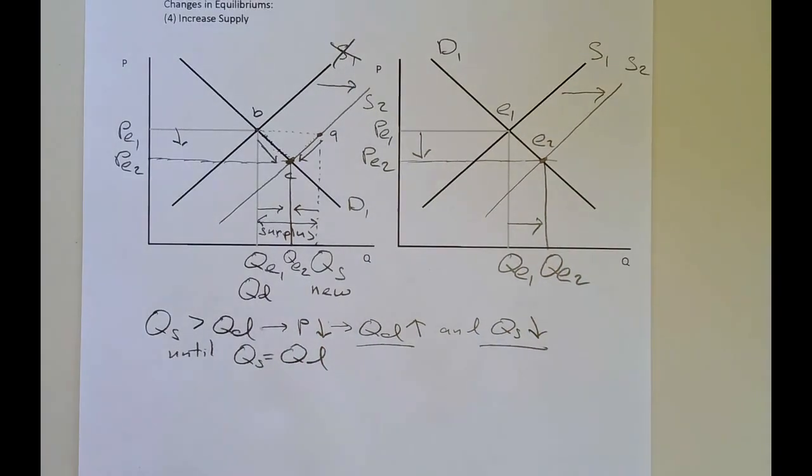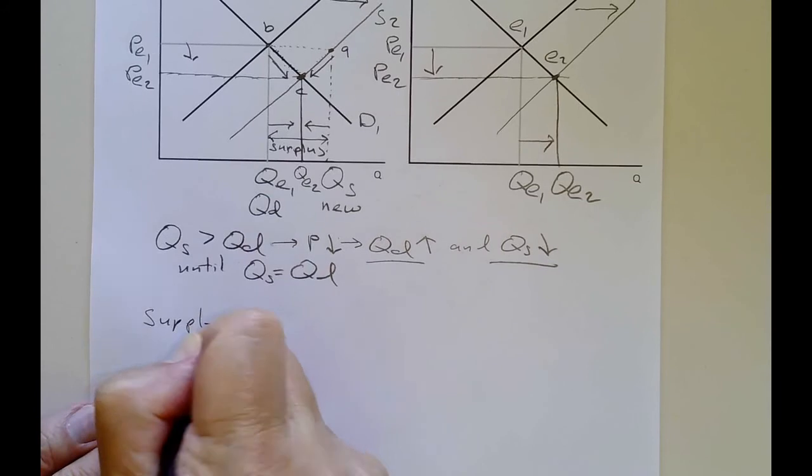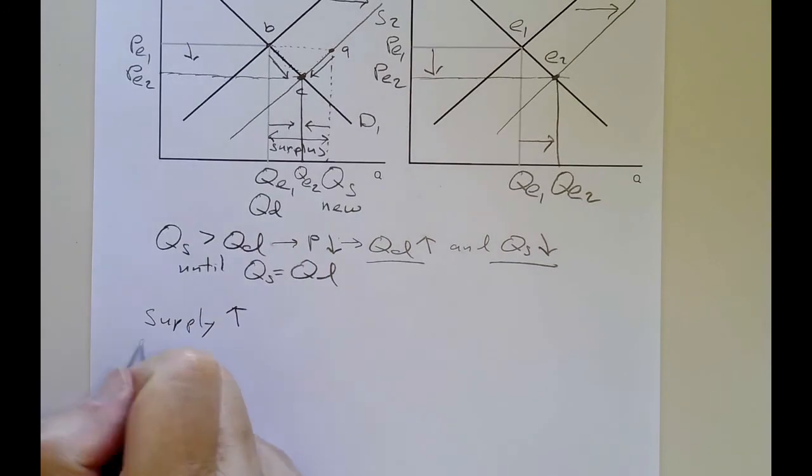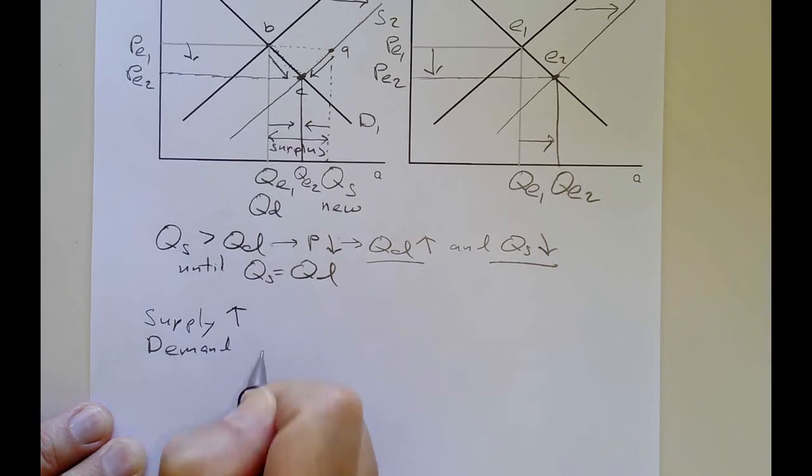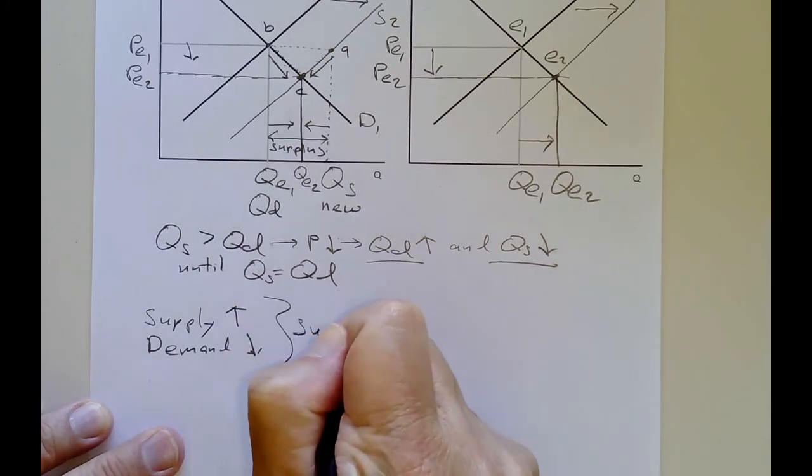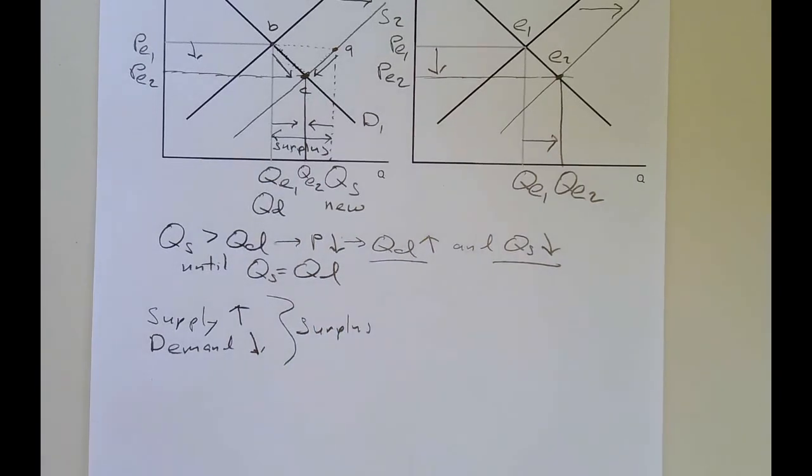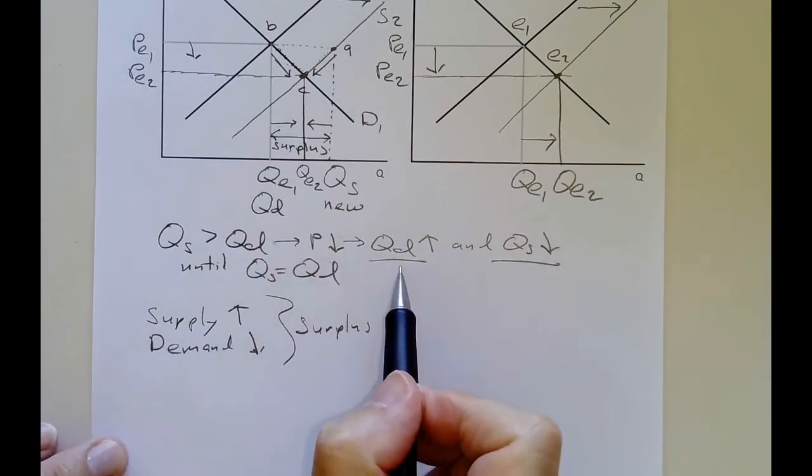So there's actually two ways to get a market surplus. One way is for the supply to increase. So if supply increases, that will give us a surplus. Or if demand decreases. And both of these will give us a surplus. When you have a surplus, what happens? Price comes down. Quantity demanded goes up. Quantity supplied goes down until equilibrium.